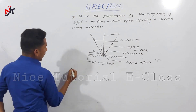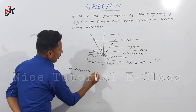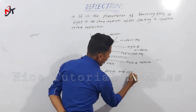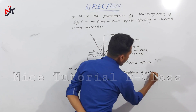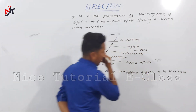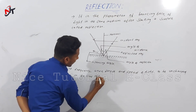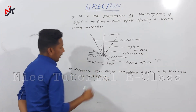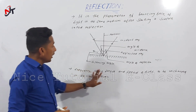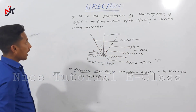In the case of reflection, the frequency, wavelength, and speed of light remain unchanged. Frequency, wavelength, and speed of light are all unchanged in the case of reflection.